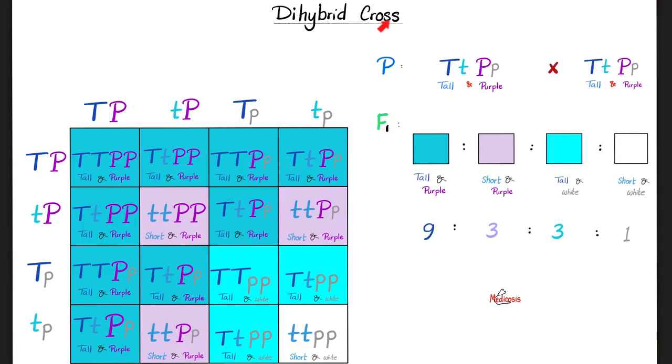How about dihybrid cross? Same thing, but with two characteristics at the same time. For example, here is one individual, and another individual, and here is some matrimony action. The first individual is tall and purple at the same moment. The second one is also tall and purple. And let's do this. These are the individuals, but these are their gametes.